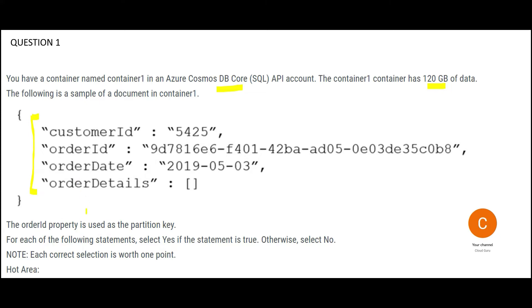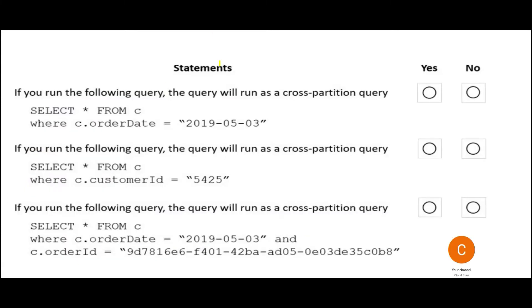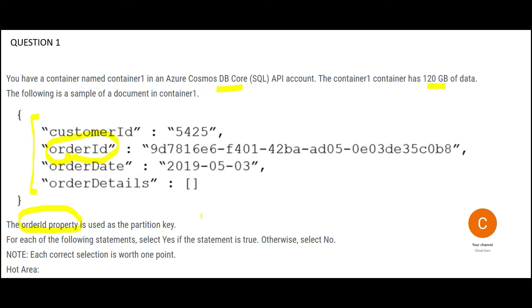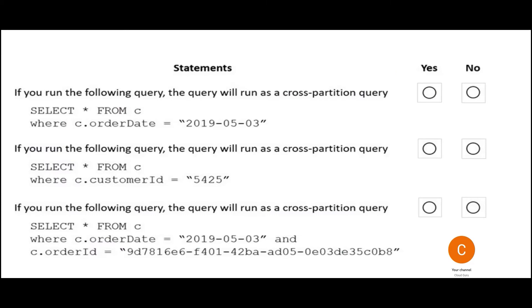The container has a partition key on order ID. The question gives you three queries and asks which one will be a cross-partition query. The trick: any query that uses only order ID will not form a cross-partition query. The third query references order ID plus order date, so it has to cross partition boundaries — making it a cross-partition query because there is already a partition on order ID.